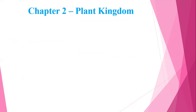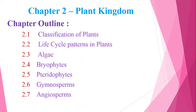Chapter 2 is Plant Kingdom. The chapter outline covers: first, Classification of Plants — you will learn how to do plant classification; second, Life Cycle Patterns in Plants; and third, Classification of Plants into groups: Algae, Bryophytes, Pteridophytes, Gymnosperms, and Angiosperms.